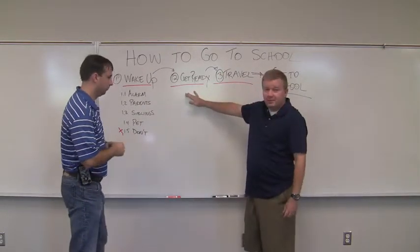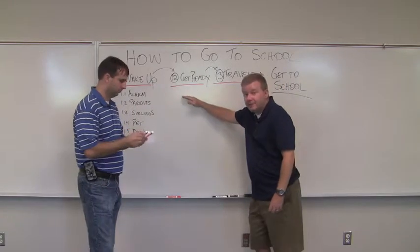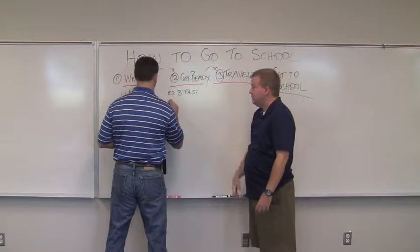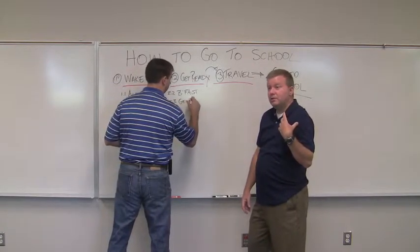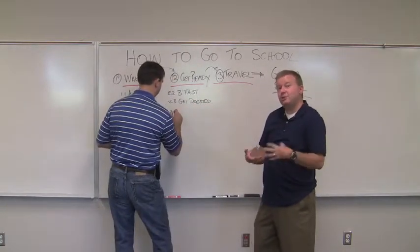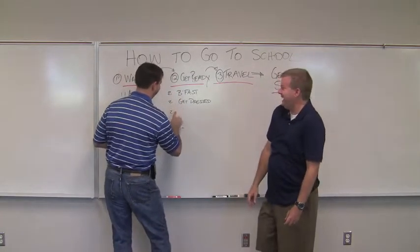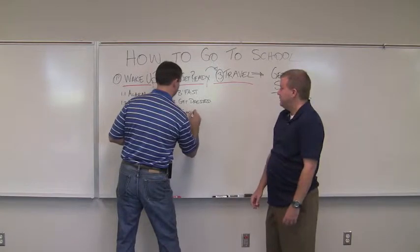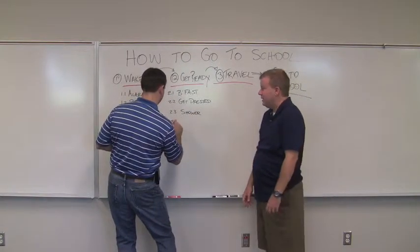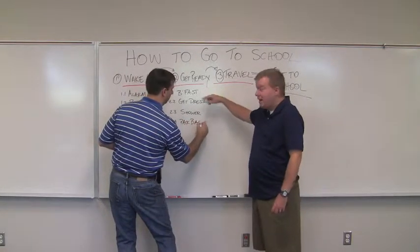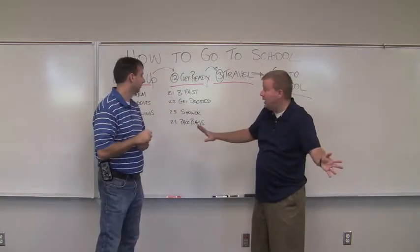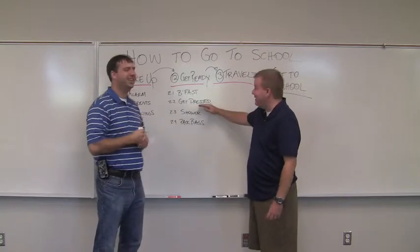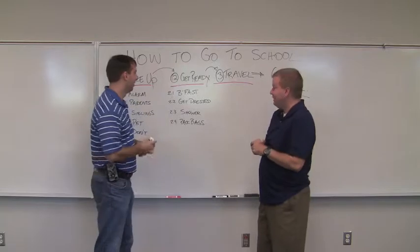The second function — get ready — you could have eaten breakfast, gotten dressed, taken a shower, and things like that. Those are solutions to getting ready. And for the third function — travel to school — you could have walked, come by car, by airplane, or by horse. You kind of get the gist of it. The big thing is figuring out what the functions are first, and we already helped you do that with the key payload functions.